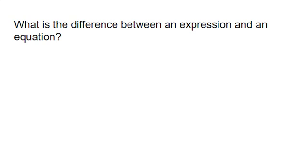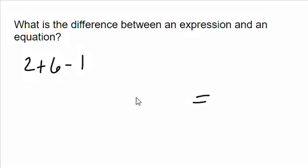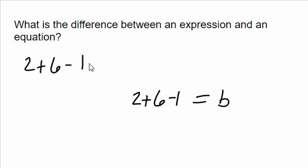Well, the only difference really is an equal sign. An expression is going to have several operations that need to be simplified without an equal sign. An equation is going to have several operations but it's going to have an equal sign, so you have to figure out what goes on each side. So: expression — no equal sign. Equation — an equal sign. Both sides have to equal the same amount. That's basically the difference between the two.